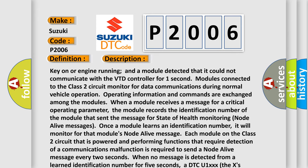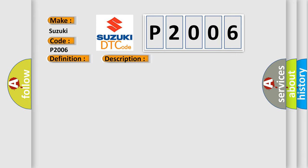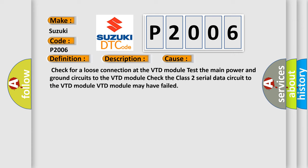This diagnostic error occurs most often in these cases: Check for a loose connection at the VTD module. Test the main power and ground circuits to the VTD module. Check the class 2 serial data circuit to the VTD module.